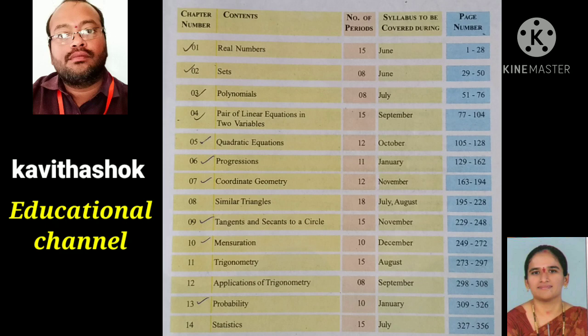The last topic is statistics. Mean by step deviation method on page 334. D is removed. Graph of ogives — in the list you have less than and more than type. There are two types on pages 345 and 355. For more than type, you have to do the project and report.